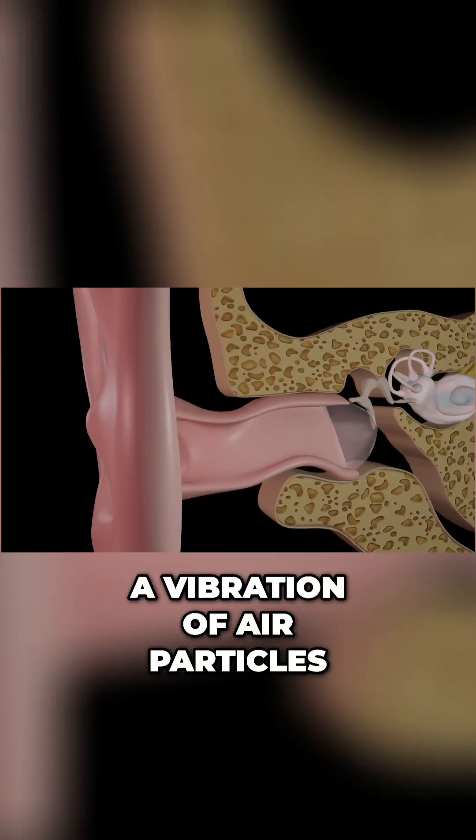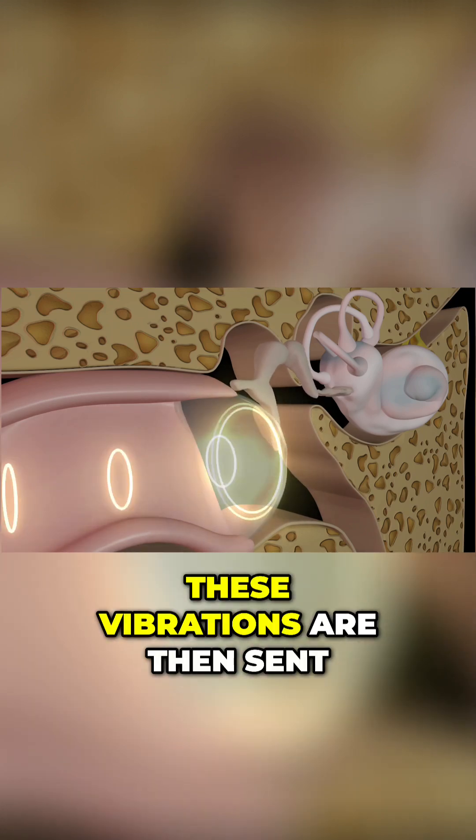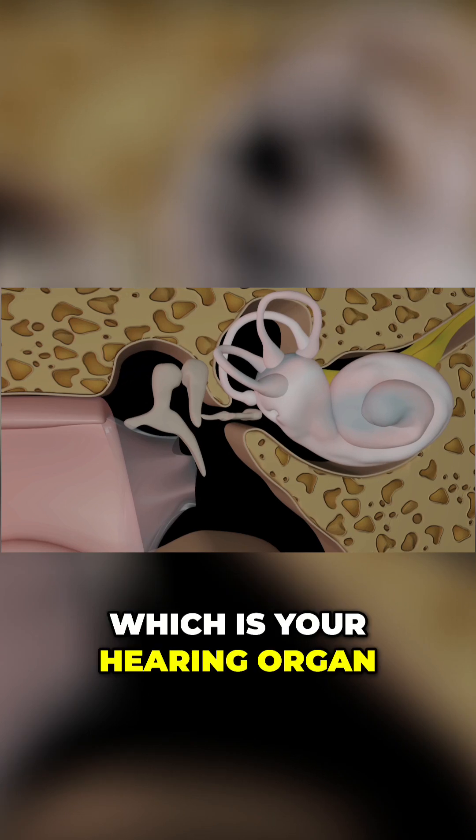Sound is a vibration of air particles. These vibrations enter the ear canal and vibrate the eardrum. These vibrations are then sent through the three middle ear bones called ossicles and into the cochlea, which is your hearing organ.